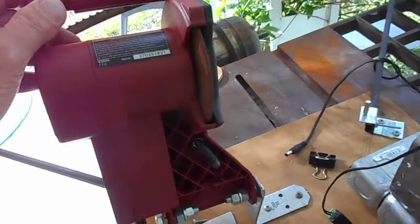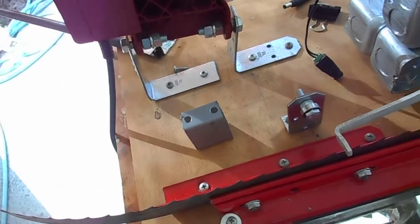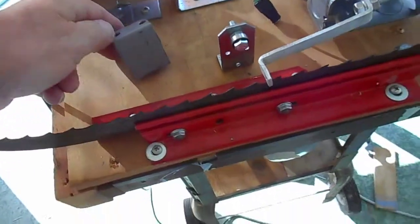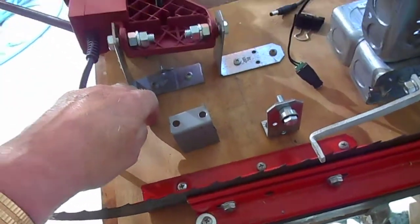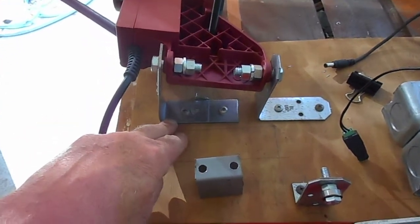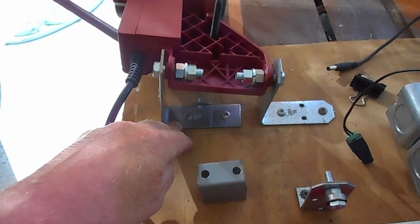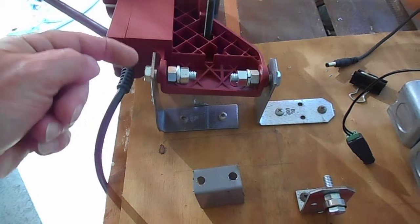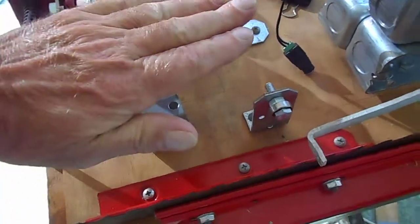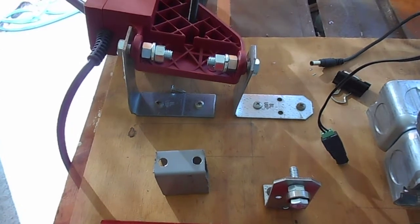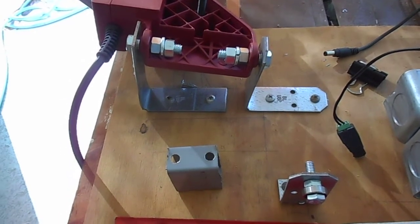This is the Harbor Freight electric chainsaw sharpener. I've attached a couple of brackets, just metal brackets that you can get from building stores like Lowe's or Home Depot. I've drilled a couple of three-eighths holes in the brackets in such a manner as it tilts it, I believe it is 9 to 11 degrees.